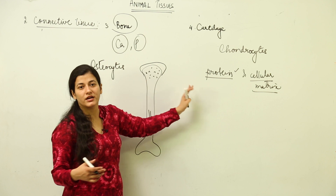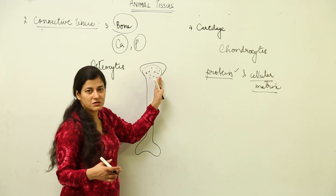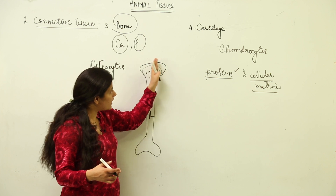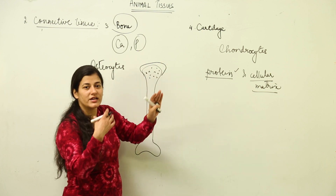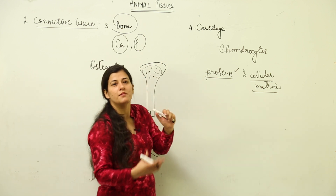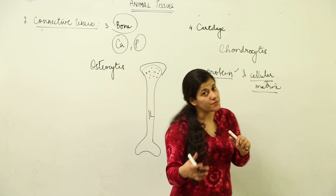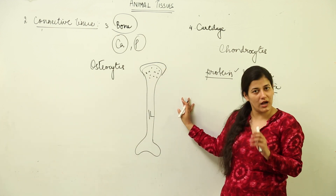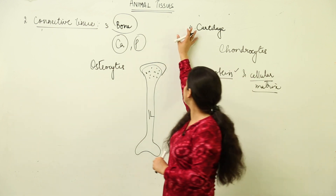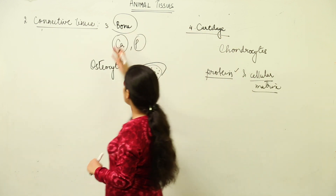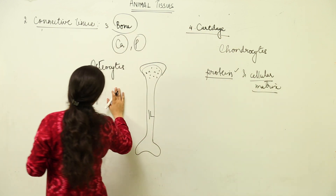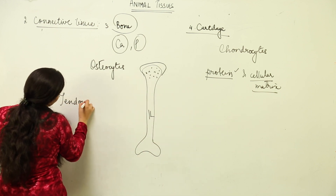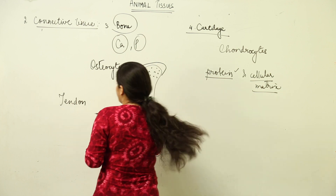Both bone and cartilage are connective tissues because the connection between bones cannot be made without the soft cartilage part, and the other connection cannot be made without the bone itself. So both qualify as connective tissue.